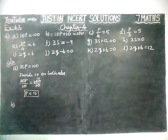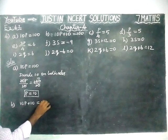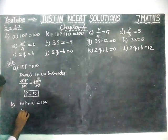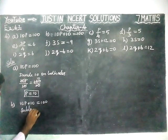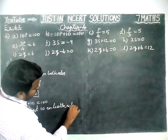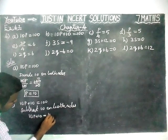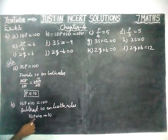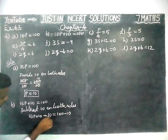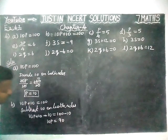Next one, Part B: 10P plus 10 is equal to 100. Here we have to do it in two steps. First, we have to subtract 10 on both sides. So, 10P plus 10 minus 10 equal to 100 minus 10. Plus 10 minus 10 gets cancelled. So, 10P is equal to 90. 100 minus 10 equal to 90.